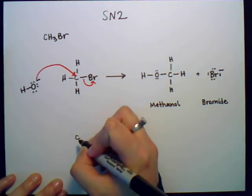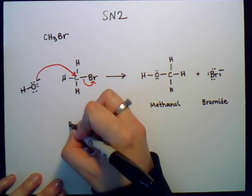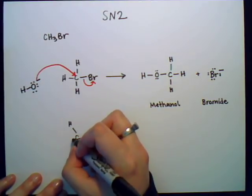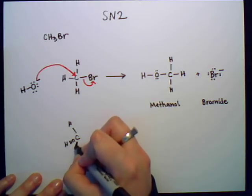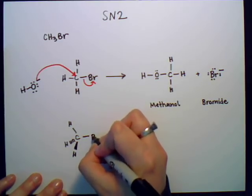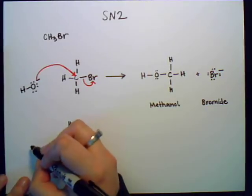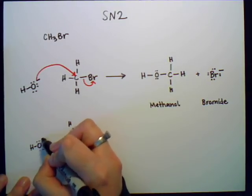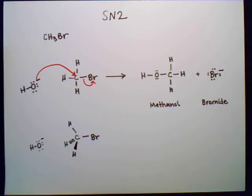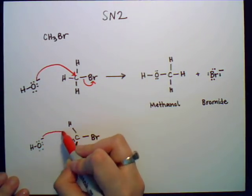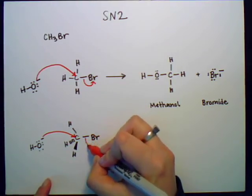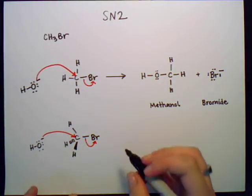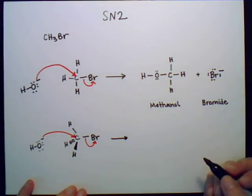So if we have this here, and we have one carbon there, and we have hydrogen there, hydrogen, hydrogen, hydrogen, and this is attached to the bromine, it's coming in there. The resultant would be—